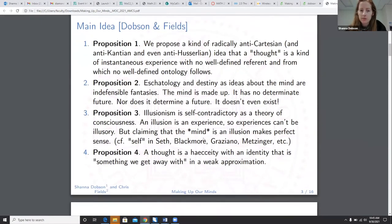It requires an assumption of processes outside any possible experience. So we're going to use sheaves to investigate the construction of temporal relations between events to temporal histories of individual events, finding together histories and episodic memories and generative models to create this plurality of distinct times and identities for objects. So we're after an event-dependent definition of time. So we have a couple main ideas. Proposition one, we propose a kind of radically anti-Cartesian, anti-Kantian, anti-Husserlian idea that a thought is a kind of instantaneous experience with no well-defined referent and from which no well-defined ontology follows.